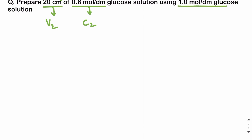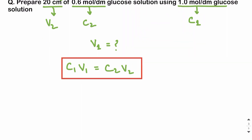The concentration of the stock solution is C1. We need to find V1 using C1V1 = C2V2. C1 = 1.0, C2 = 0.6 mole per dm³, V2 = 20 cm³. So V1 = (C2 × V2) / C1 = (0.6 × 20) / 1.0 = 12 cm³.